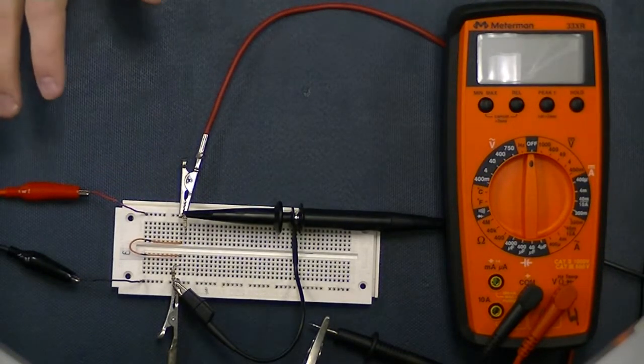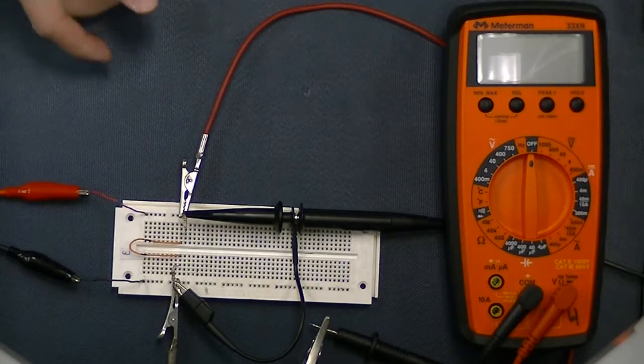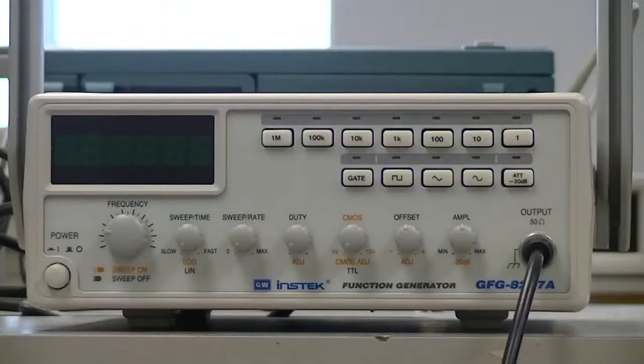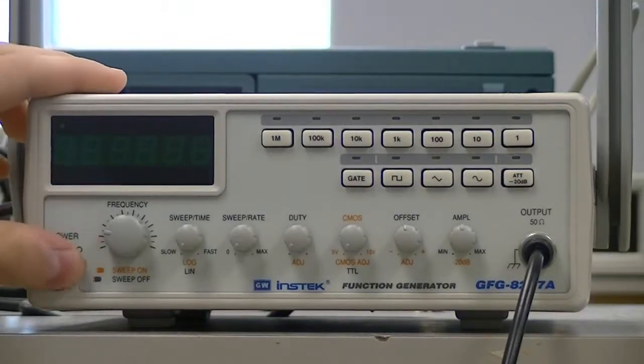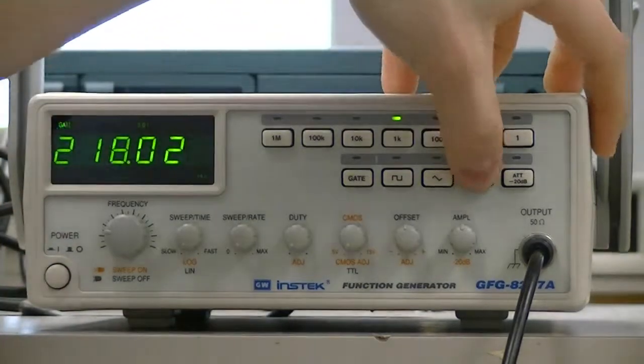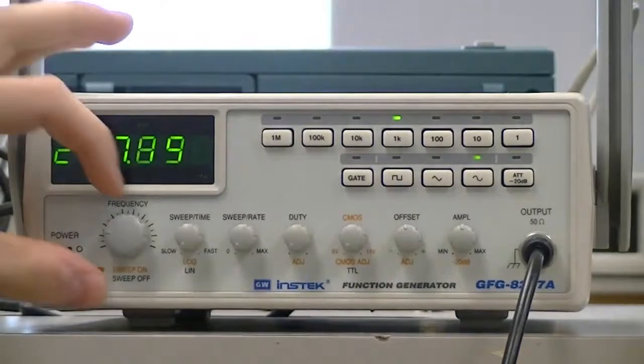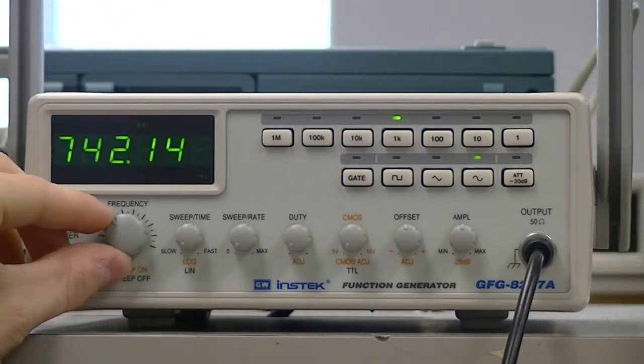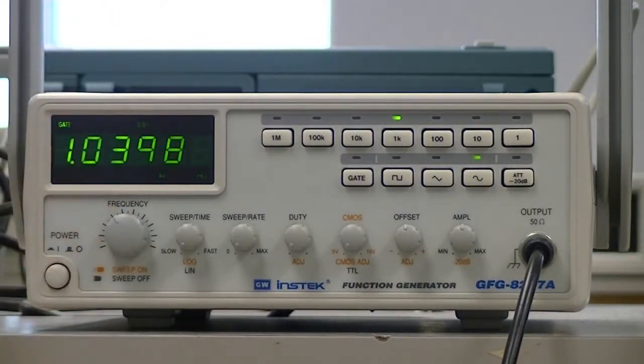Now we are going to throw some AC current into this circuit. Let's go to the function generator. So just to keep things standard and simple, we are going to set the function generator to a 1k frequency sinusoidal wave with no DC offset. Just set that right there. Perfect.